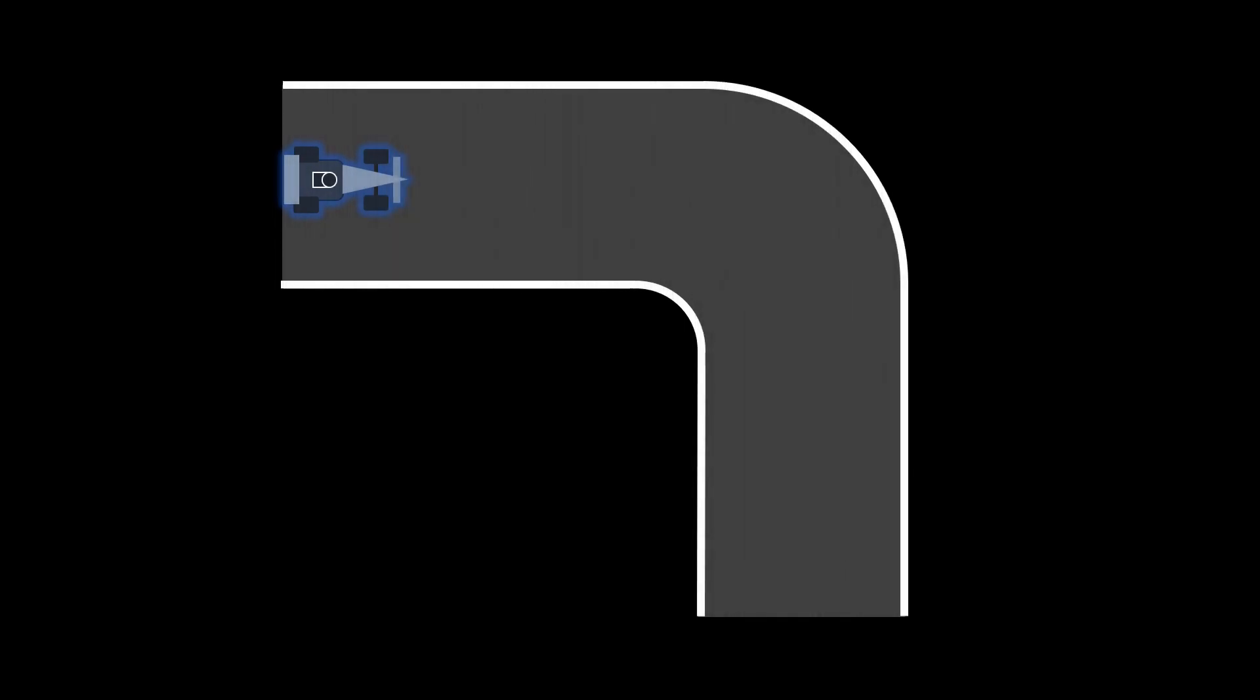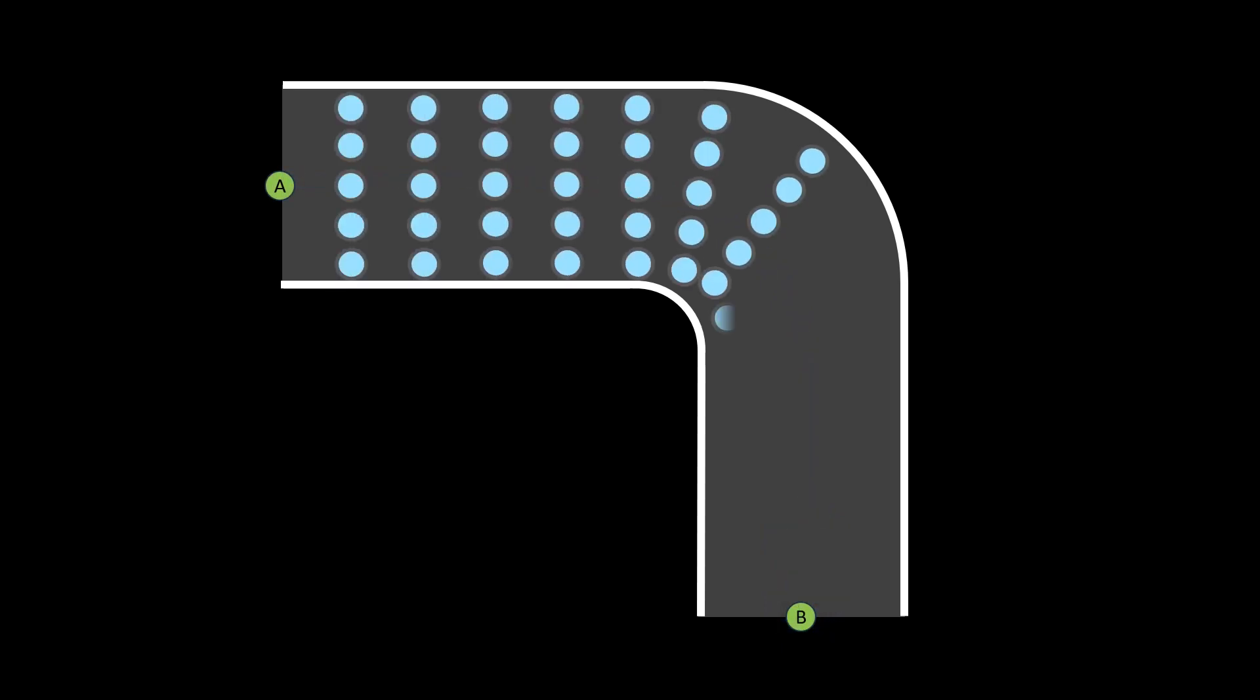Now we will use this algorithm for determining racing line of a Formula One car. Here is a typical turn on a racetrack. We break down the racetrack into multiple stages. Each stage has multiple states. The objective is to find the fastest path through these states.